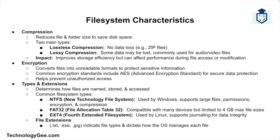The first type is lossless compression, which reduces file size without losing any data — think of a zip file. The second type is lossy compression, which reduces file size but may lose some data quality, and this is typically used for audio and video files. Compression can improve storage efficiency but may affect performance when files are being accessed or modified.